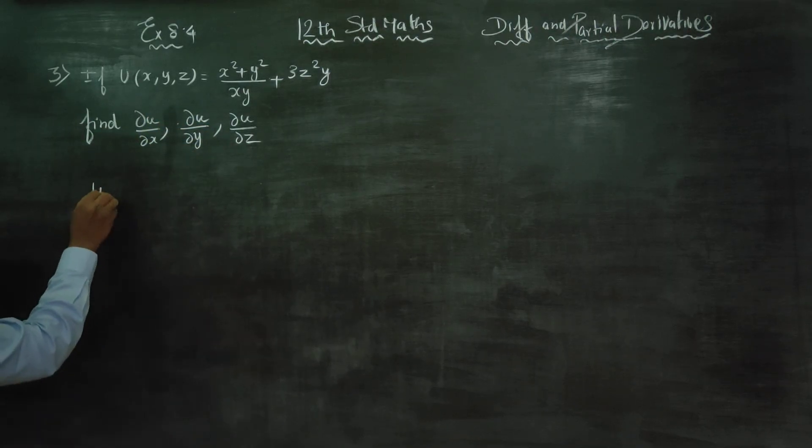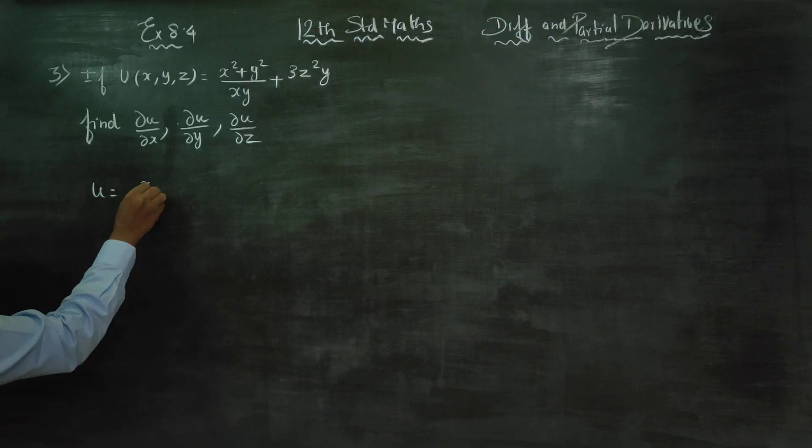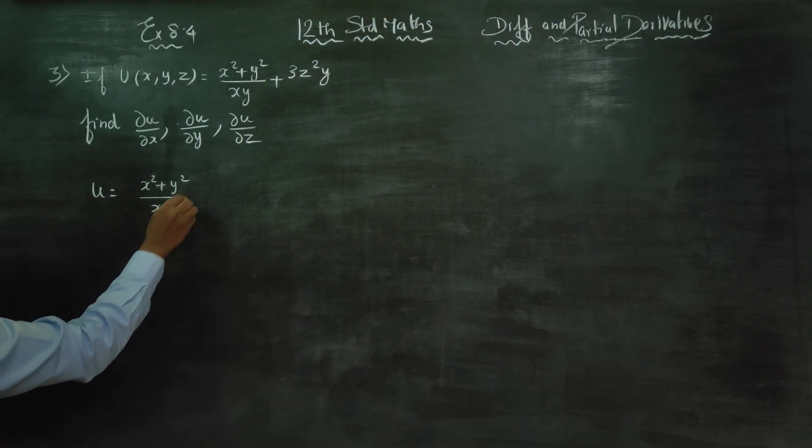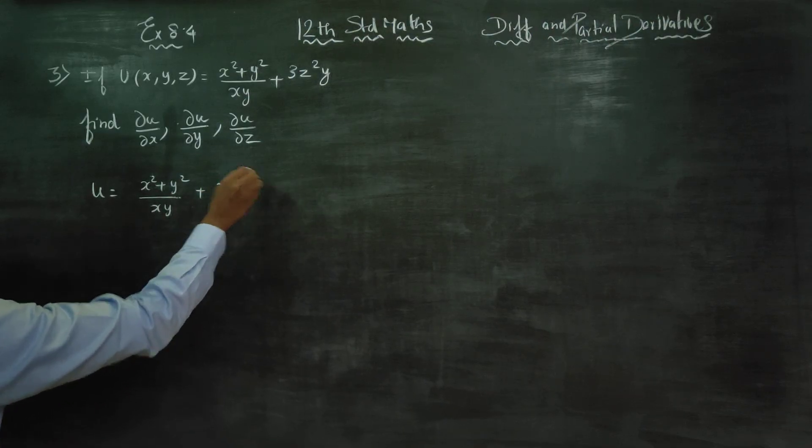First I will start with u is equal to, you need a function on the x square plus y square by x, y plus 3z square y.